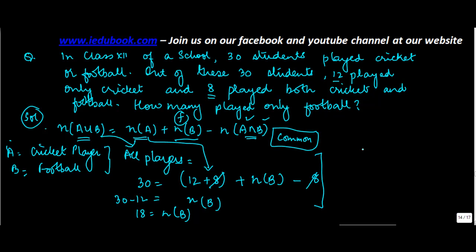Now, you can also find this out through a Venn diagram. Let's say this is cricket. Let's say this is football. How many students play only cricket? 12. Common 8.